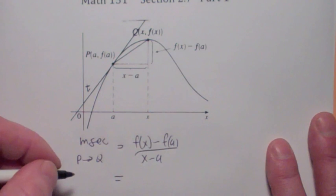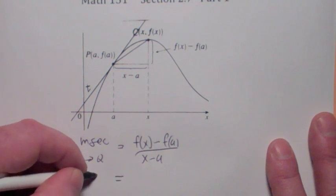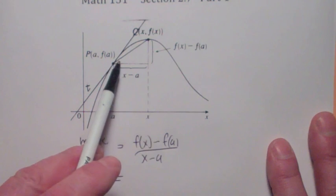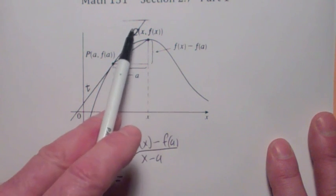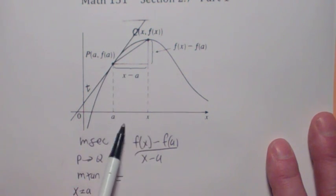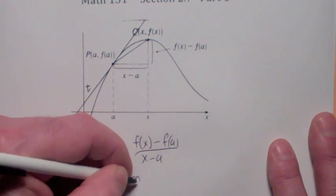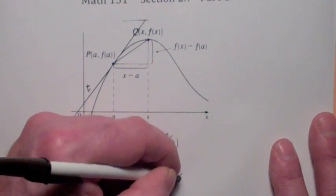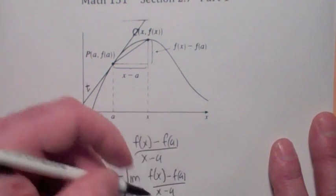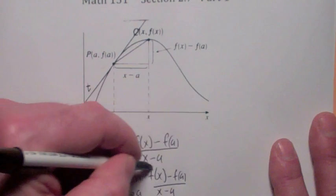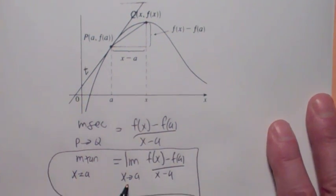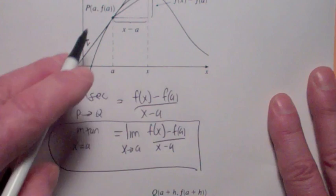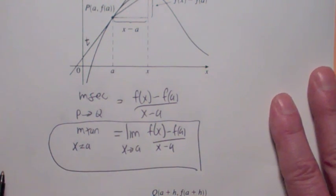And then the slope of the tangent line at x equal a — we're asking what is the slope getting close to as these points get close together. You can say that x gets close to a. So that's a limit: the limit as x gets close to a of f(x) minus f(a) over x minus a. We don't care what happens when x equals a. In fact, if x equals a, the slope is undefined. It's what it is getting close to.